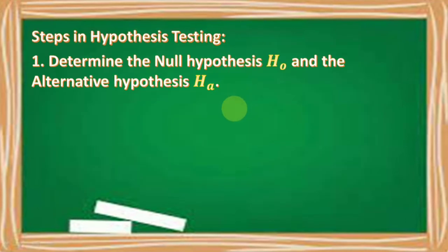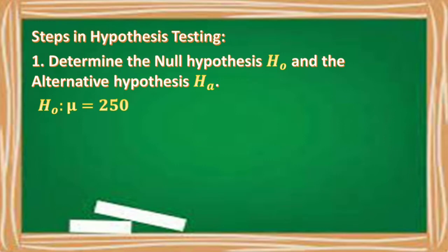Number one, determine the null hypothesis H₀ and the alternative hypothesis Hₐ. Our null hypothesis is mu is equal to 250, because this is the claim of the owner. The alternative hypothesis is mu is not equal to 250, because the computed mean from the sample is only 248.